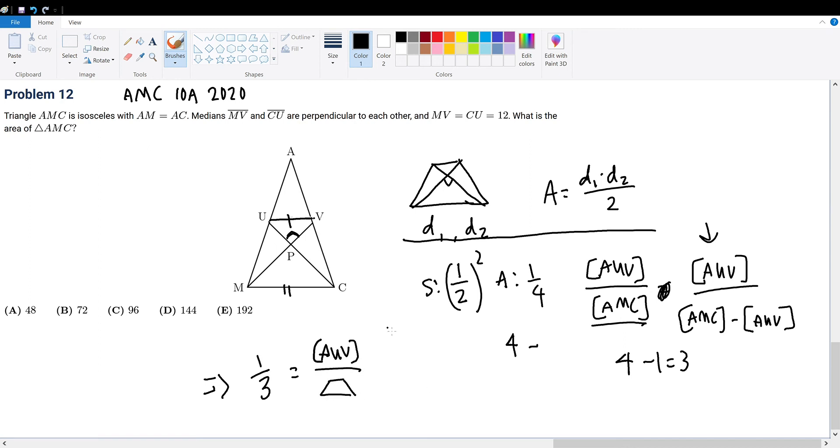Since we know the area formula for the trapezoid, let's substitute with an actual value. The orthogonal diagonals are MV and CU which is 12, so 12 times 12 divided by 2 equals 72.